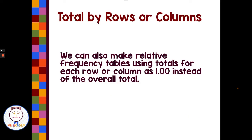Now, we can have totals by rows or columns. So instead of just relating everything to the overall total, sometimes we have relative frequency tables that are just based on a column or row. So we can make relative frequency tables using totals for each row or column as 1.00 or 100 percent instead of the overall total. So let's look at an example of one of those.